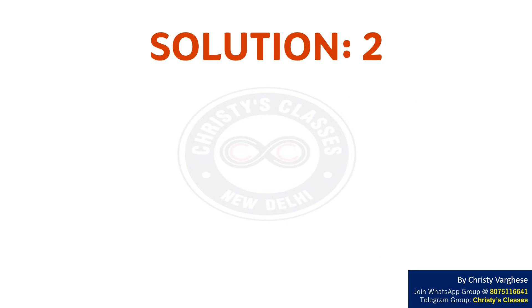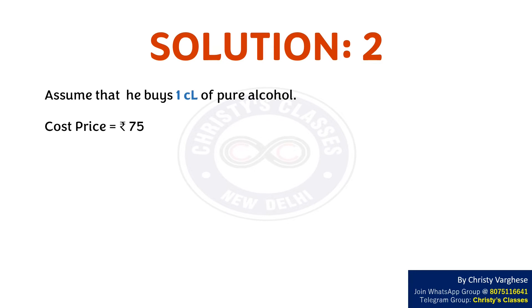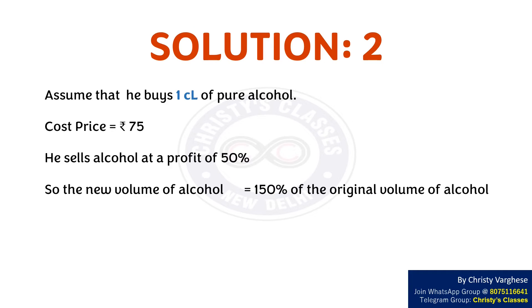Solution 2: Assume that he buys 1 centiliter of pure alcohol. Its cost price equals Rs. 75. He sells alcohol at a profit of 50%, so the new volume of alcohol is 150% of the original volume of alcohol, i.e., 150% of 1 centiliter, which equals 1.5 centiliter. The difference in volume is made up by water.